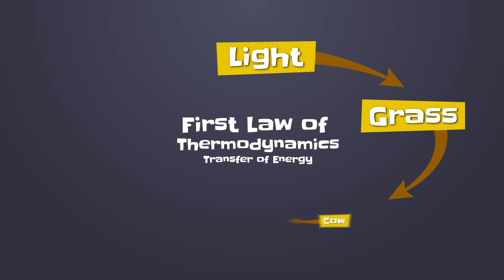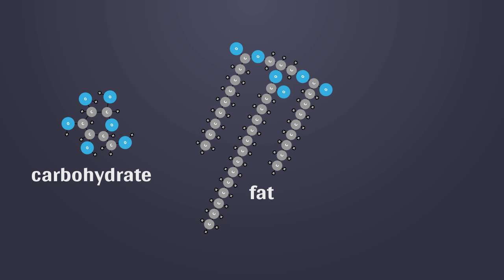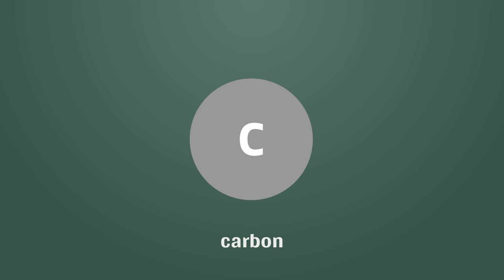During digestion, food is broken down into carbohydrate, fat, and protein molecules. These molecules are further broken down into individual atoms of carbon, hydrogen, and oxygen.